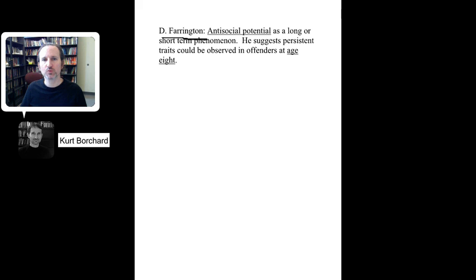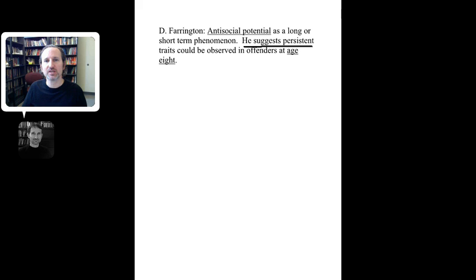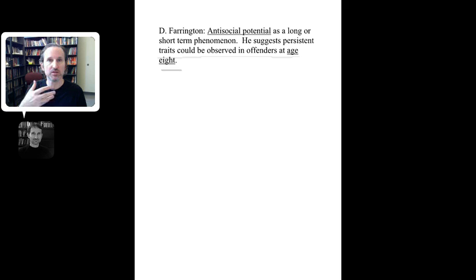Finally, the chapter discusses the work of Farrington and the idea of antisocial potential — as a long-term or short-term phenomenon — which has gained a lot of traction in the last couple decades as related to crime. Farrington suggests that certain persistent traits could be observed in offenders very early, by the age of eight. This echoes the idea that, as Freud once said, the child is the father to the man — the child is going to be the future of who that person becomes, and maybe some of those traits are set far earlier than we might have thought.